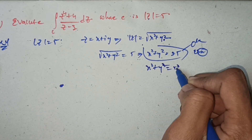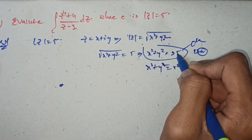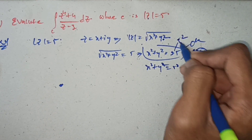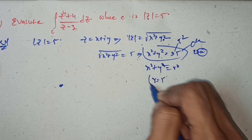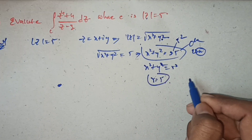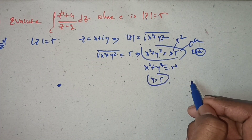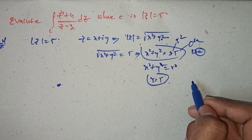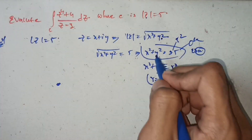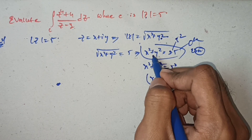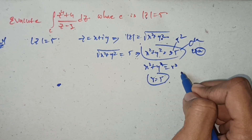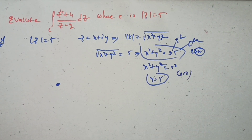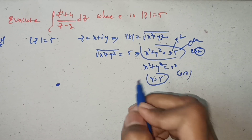So r² = 25, which gives r = 5. The radius is 5. We draw a circle with center (0, 0).